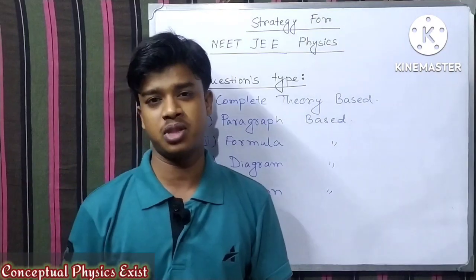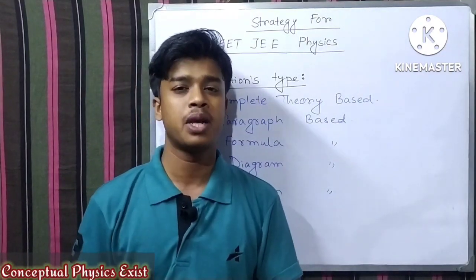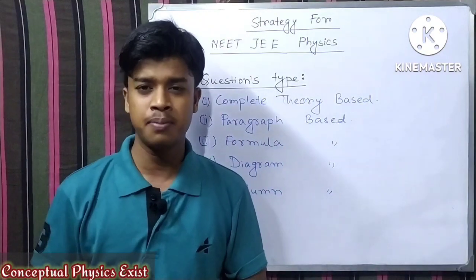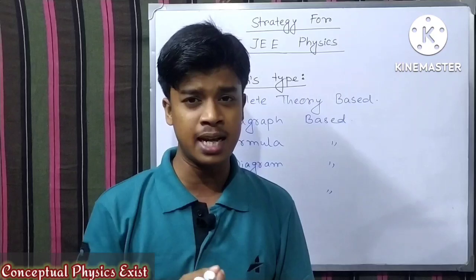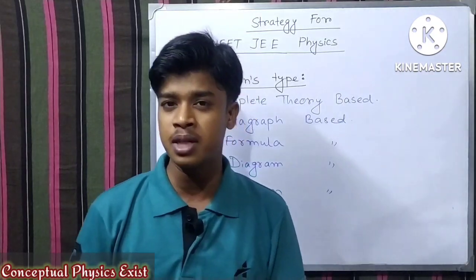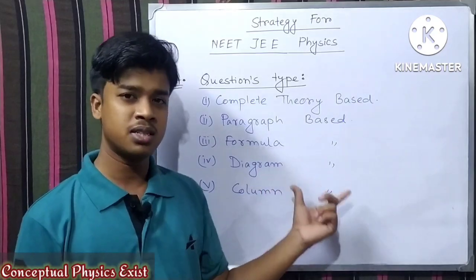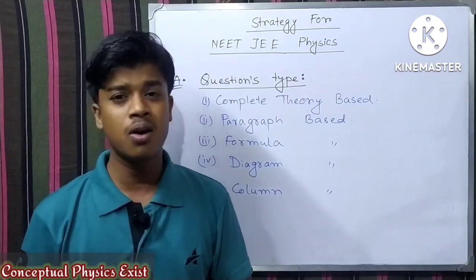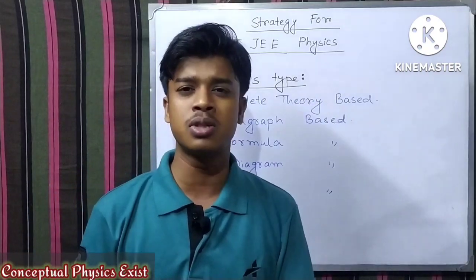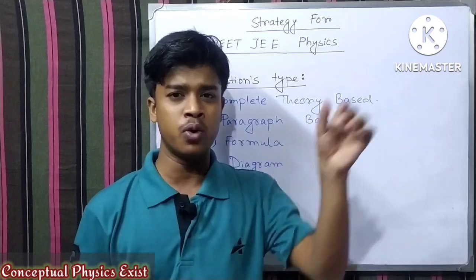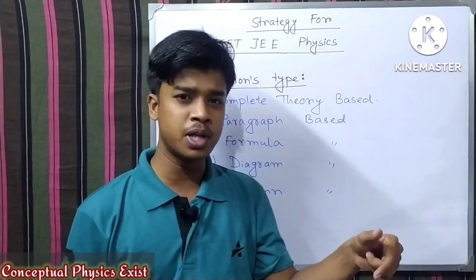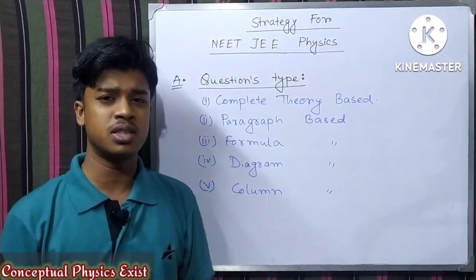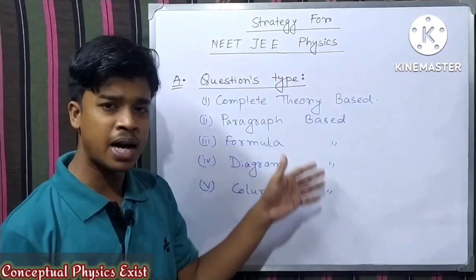Next, diagram-based questions. If you have a diagram-based question, you analyze the diagram and answer accordingly. Last, column-based questions. In column-based questions, there is a matching format — column A matches with column B. This is a data-matching type question. So that's column-based questions. Clear? So there are five types of questions in physics.